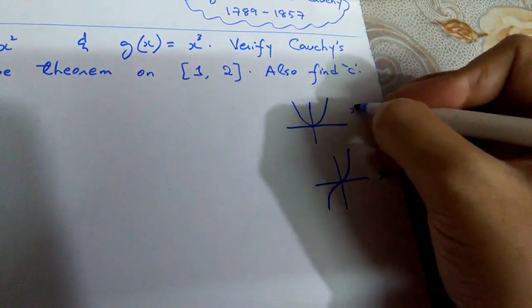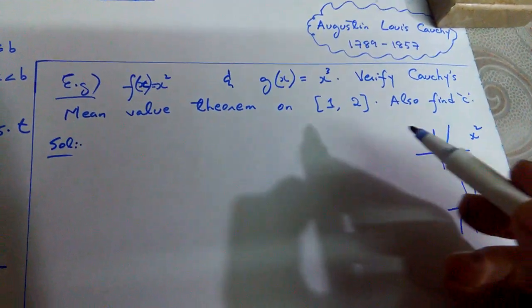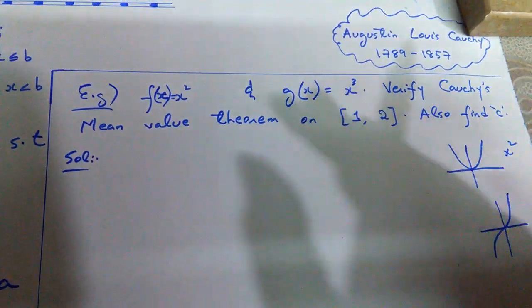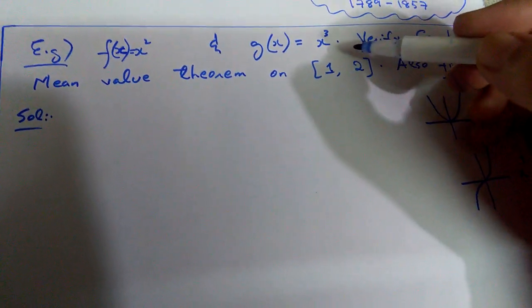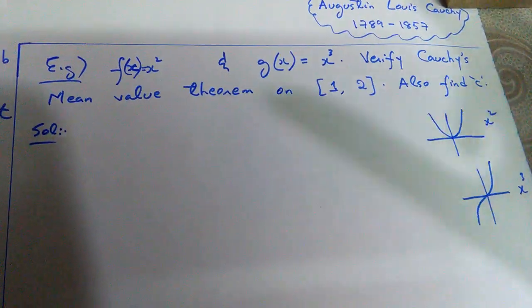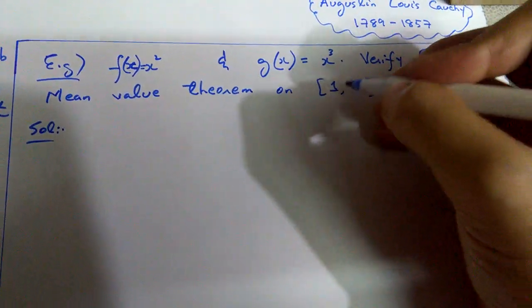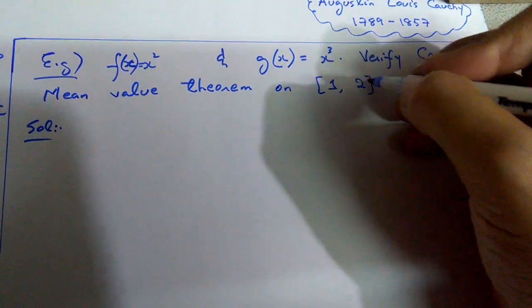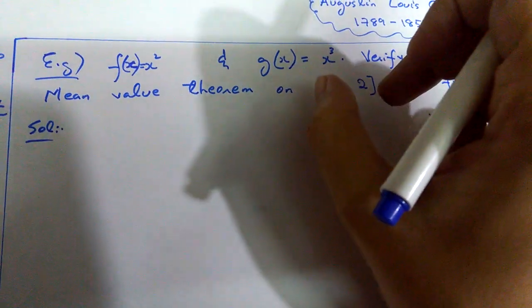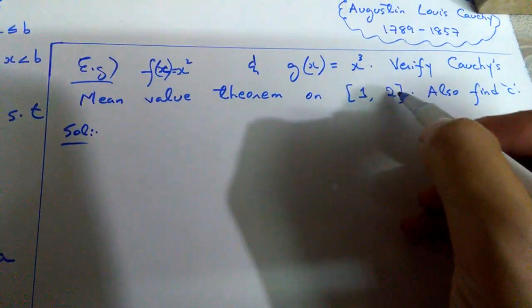This is for x cubed and this is for x squared — you can confirm it yourself. Both functions are continuous no matter how far you extend the interval, and they are definitely continuous within this defined interval [1, 2].